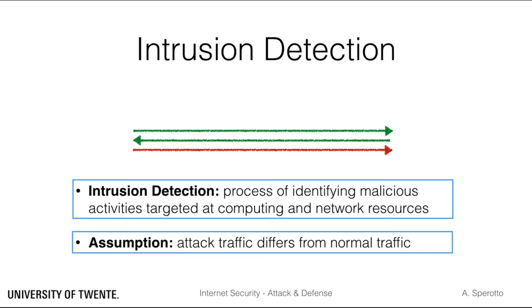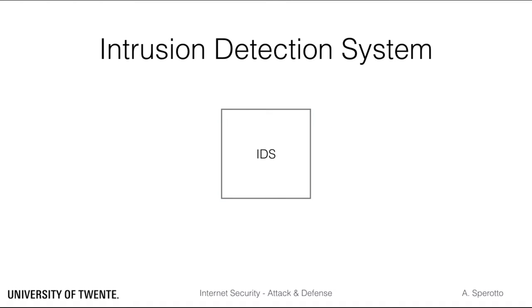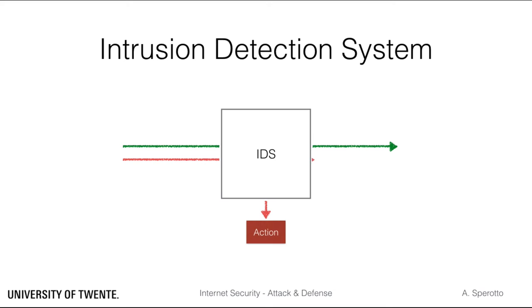The underlying assumption when doing intrusion detection is that attack traffic will look different to a certain extent from normal traffic, and therefore a system will be able to separate the two based on a set of characteristics. On the high level, an intrusion detection system has therefore the tasks of inspecting traffic and taking actions when malicious traffic is identified.